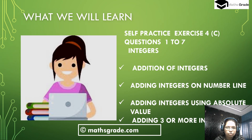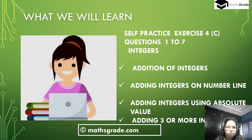What we will learn today. Today we will learn and solve self-practice exercise questions for C. Questions 1 to 7 of chapter integers, and topics are addition of integers, adding integers on number line, adding integers using absolute value, and adding 3 or more integers. Let's solve some questions.